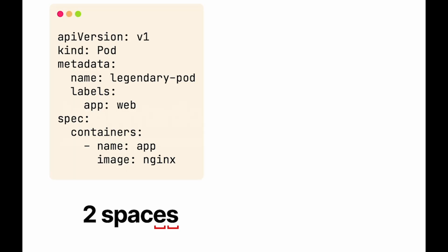It's time for tip number one: indentation. YAML uses spaces as indentation. You can use two spaces. Imagine your YAML file looks like this — a plain and simple pod YAML. Anytime you have to indent something, you go ahead and put in two spaces, like I'm showing you here on the containers node. And the subsequent name node also needs a further two spaces of indentation.